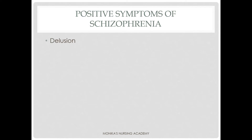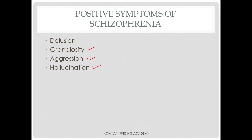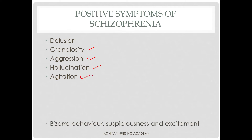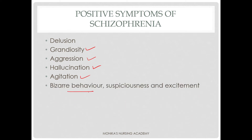Next we will discuss positive symptoms of schizophrenia. Positive symptoms include: delusions, which are false fixed beliefs; grandiosity, where the patient feels he is the most powerful person; aggression, where the patient remains aggressive; hallucinations, where the patient experiences sensation in the absence of stimuli; agitation; bizarre behavior, showing very strange behavior; suspicious or paranoid nature; and excitement.